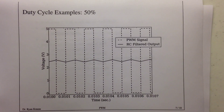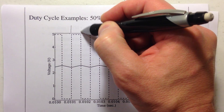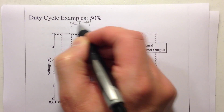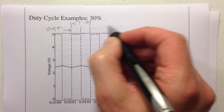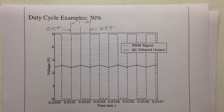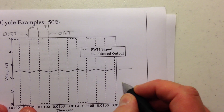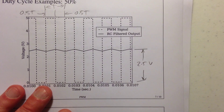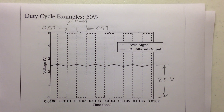Similarly, if I had 50% on time, I'm on for exactly the same amount of time that I'm off. I've got a total period T, my on time is 0.5T, and my off time is also 0.5T — a 50% duty cycle. The average value of the filtered output is then 2.5 volts. Again, the duty cycle is being converted to a DC output.